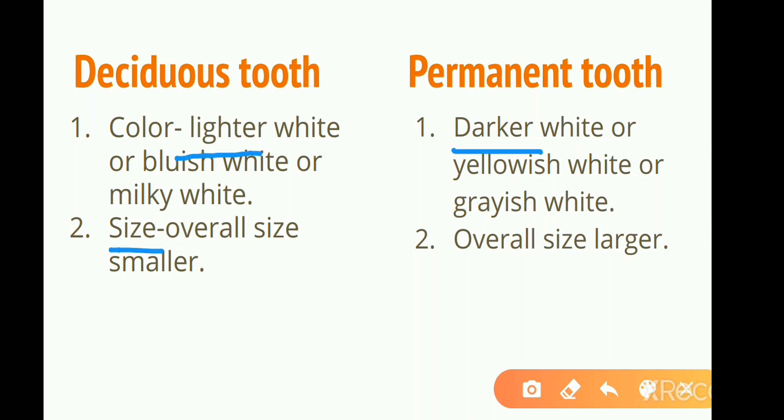Number 2: Size. The overall size of deciduous teeth is smaller, while the overall size of permanent teeth is larger.